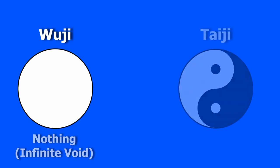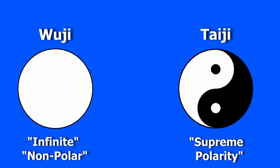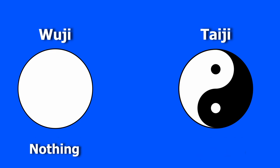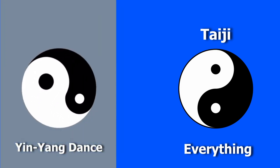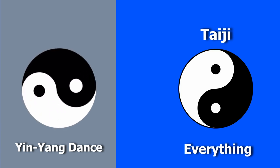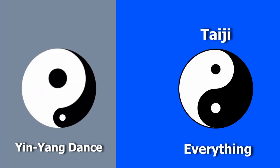From the principle of wuji manifested the principle of taiji, often translated as the supreme polarity. While wuji is the non-dual, non-polar, infinite thing that came before everything, taiji is basically the supreme polarity that represents everything. While wuji is the nothing, taiji is the everything. Taiji is essentially the yin yang dance that gives rise to everything in the universe — or as Chinese philosophy might say, it is that which gave birth to the ten thousand things.